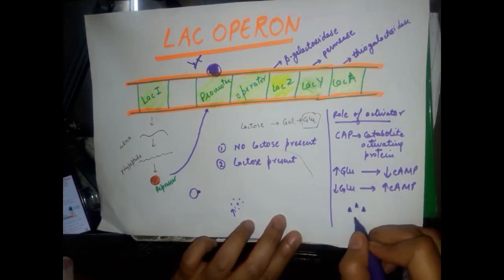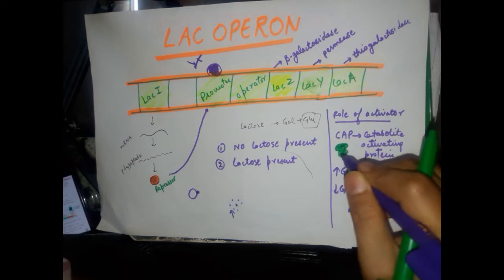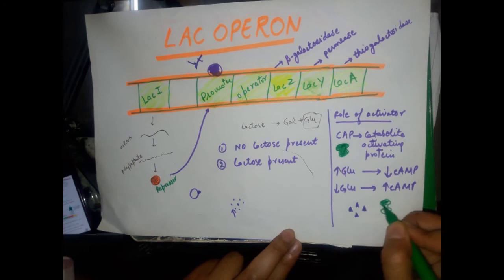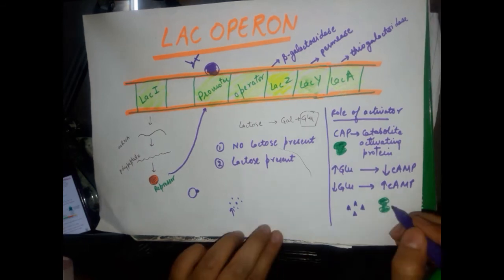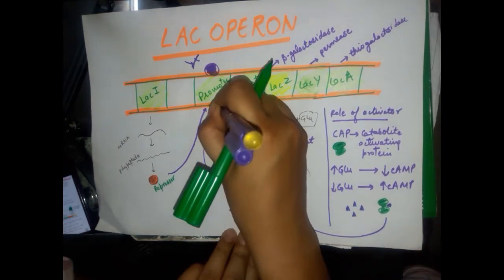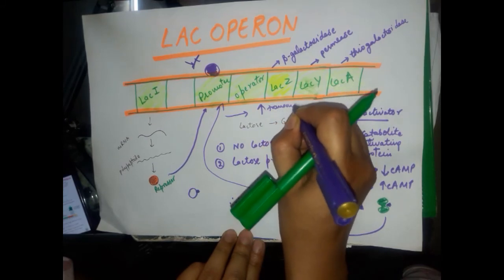When there is low glucose in the cell, there will be high amounts of cAMP. This cAMP binds to the catabolite activating protein (CAP) and forms a complex. This CAP-cAMP complex binds to the promoter and leads to enhanced transcription of the lac operon genes, enabling the cell to metabolize lactose and obtain glucose as its energy source.